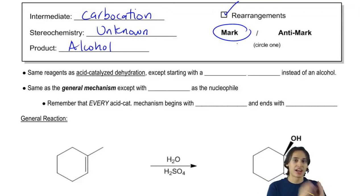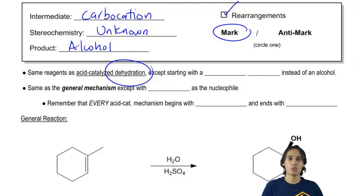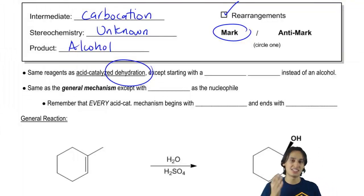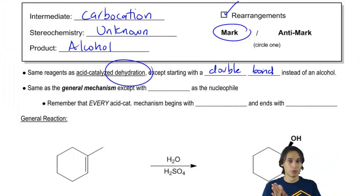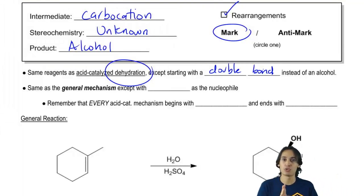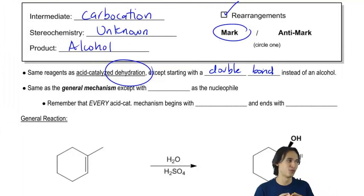Basically, the reagents for hydration and dehydration are exactly the same — we're going to have an aqueous acid in both reactions. So how are you going to know whether it's a hydration or a dehydration? A hydration uses the same reagents except that you're starting with a double bond. If you're starting with a double bond and expose it to aqueous acid, you get an alcohol. If you're starting with an alcohol and expose it to aqueous acid, you get a double bond. These reactions are reversible, so they're always in equilibrium — never going fully to the right or fully to the left.